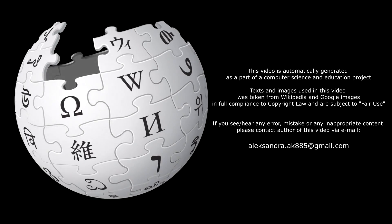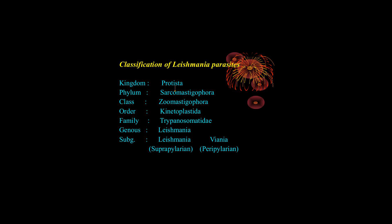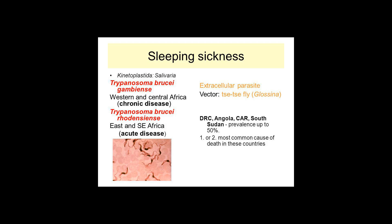Kinetoplastida, or Kinetoplastia as a class, is a group of flagellated protists belonging to the phylum Euglenozoa and characterized by the presence of an organelle with a large mass of DNA called kinetoplast.